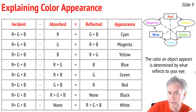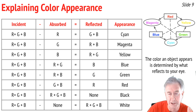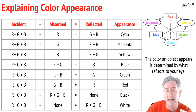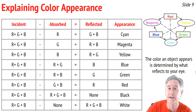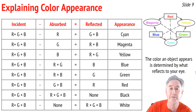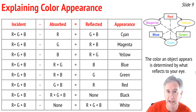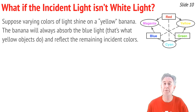Here's an information-intensive table that explains the color appearance of a variety of objects. You could cover up the appearance column and see if you can predict it from the incident, absorbed, and reflected colors. Note that objects appearing black absorb all the light colors that land on them and reflect nothing — black is the absence of all colors of light. Objects that appear white reflect all colors of light to your eye; when RGB lands on them, nothing is absorbed.